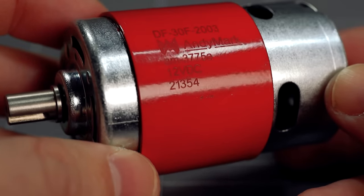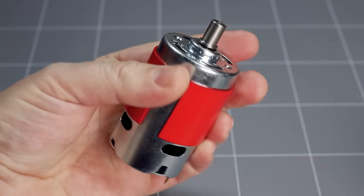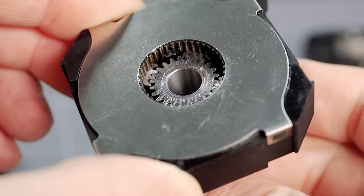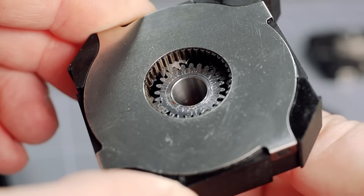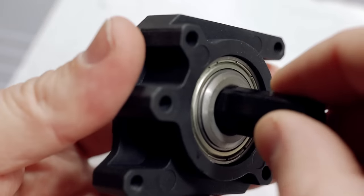I went with brushed 775 motors that spin up to about 20,000 RPM. These will transfer power to a super strong, modular planetary gearbox. To start with though, I'll just be using a 3 to 1 gear ratio, which is the longest available.